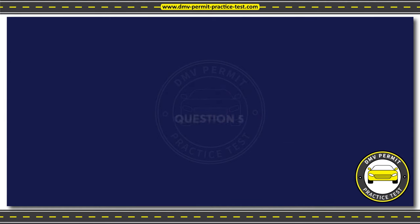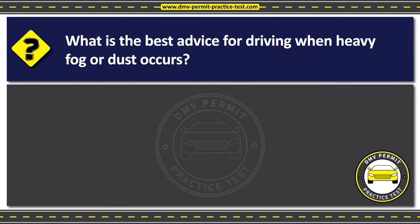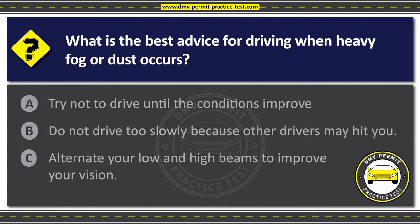Question 5. What is the best advice for driving when heavy fog or dust occurs? Option A: Try not to drive until the conditions improve. Option B: Do not drive too slowly because other drivers may hit you. Option C: Alternate your low and high beams to improve your vision. The correct answer is Option A: Try not to drive until the conditions improve. If the conditions become too hazardous, consider pulling over to a safe location and waiting until the fog or dust clears. Remember, your safety and the safety of others on the road is of utmost importance.